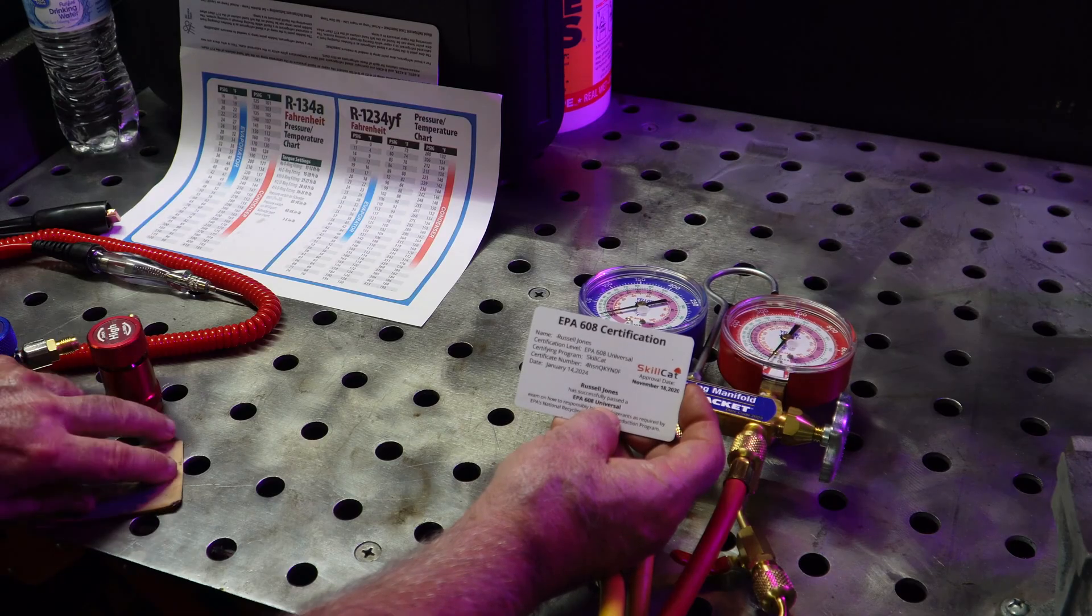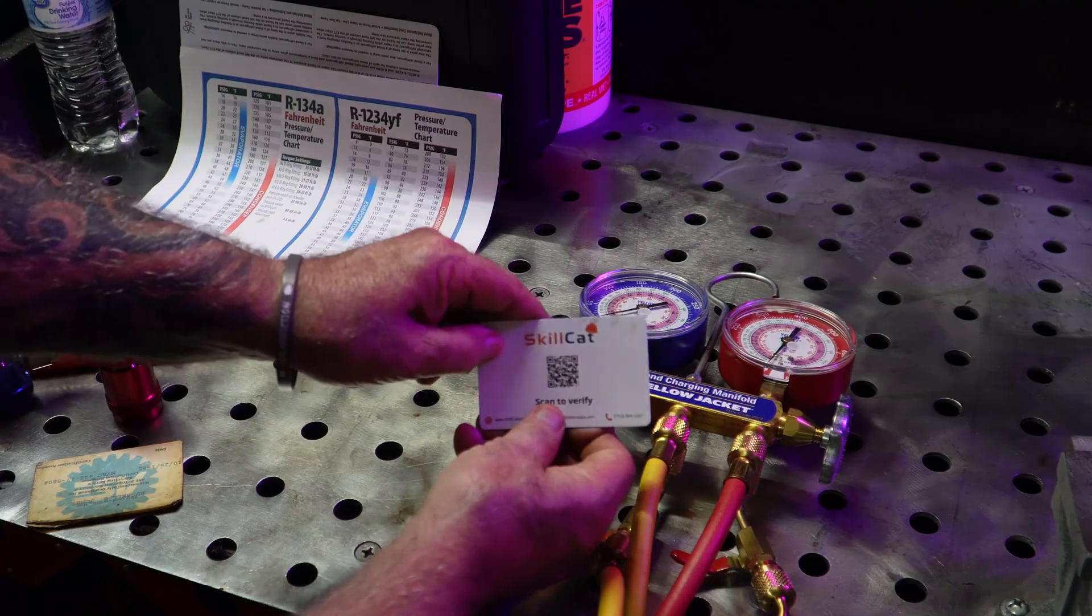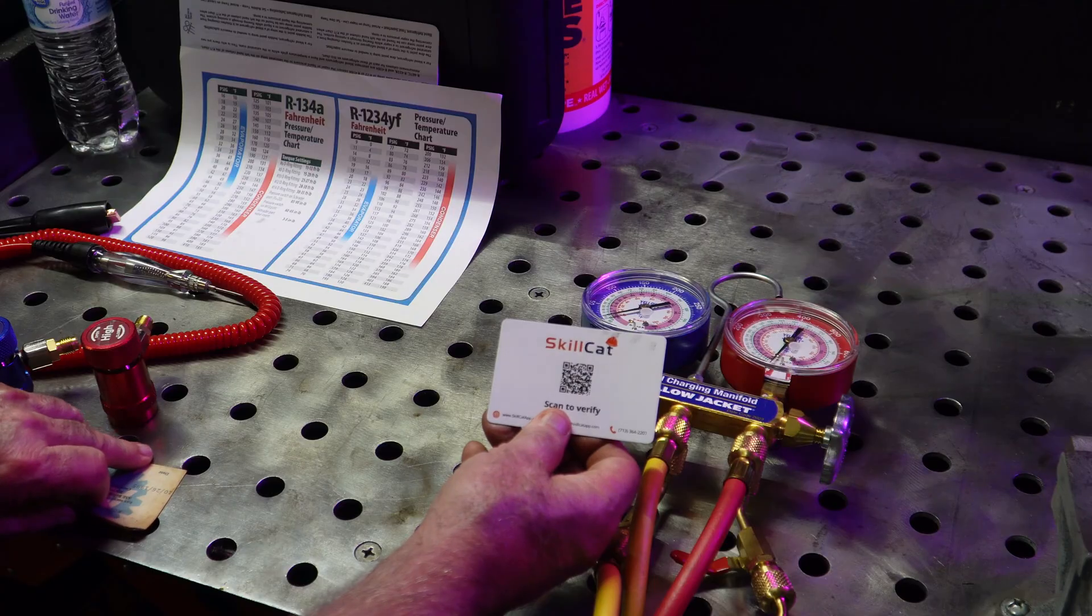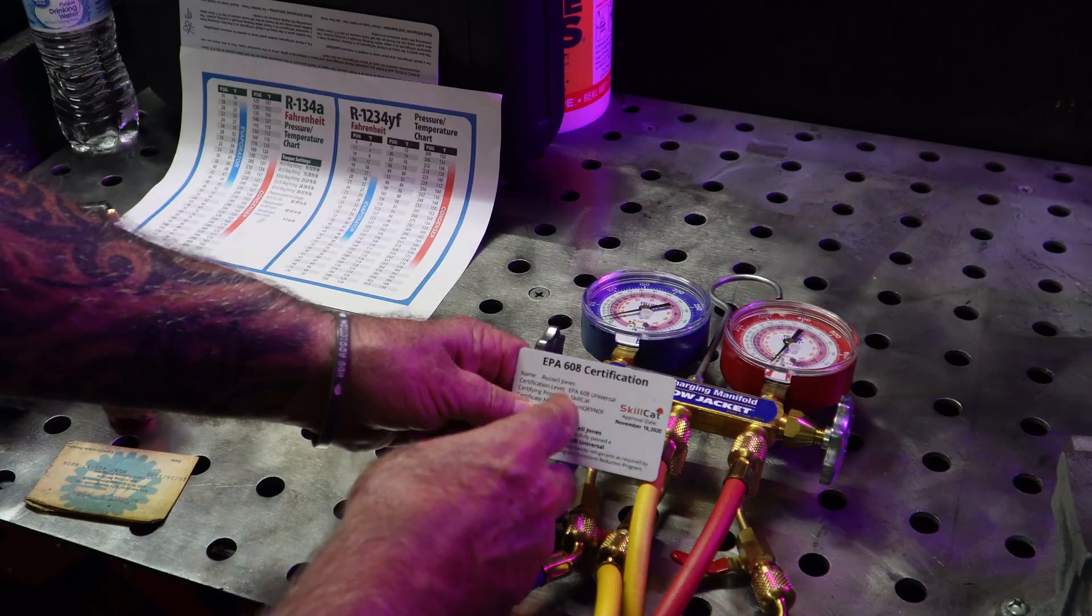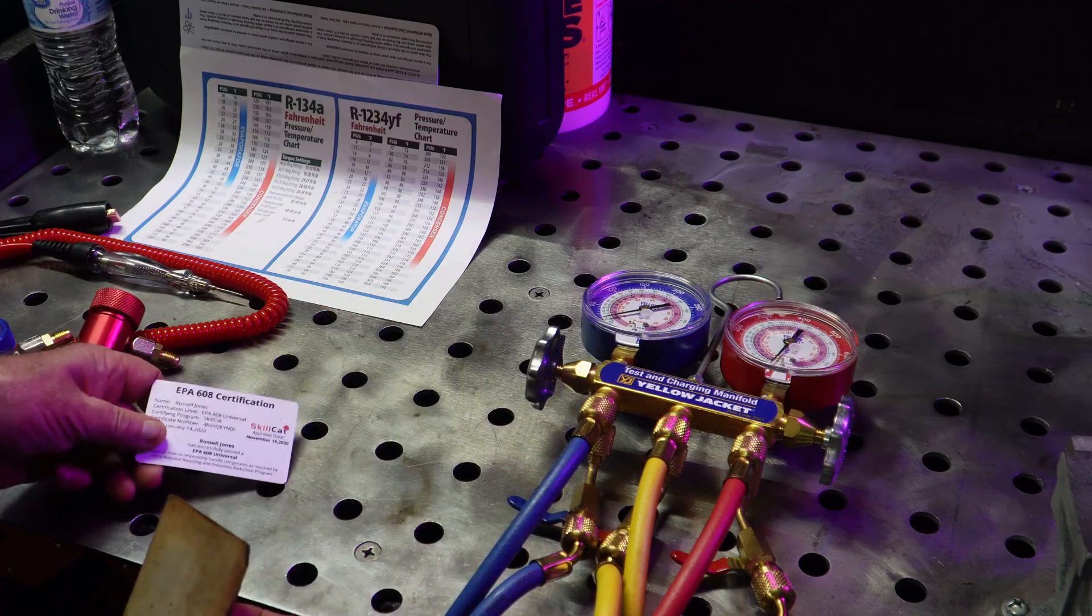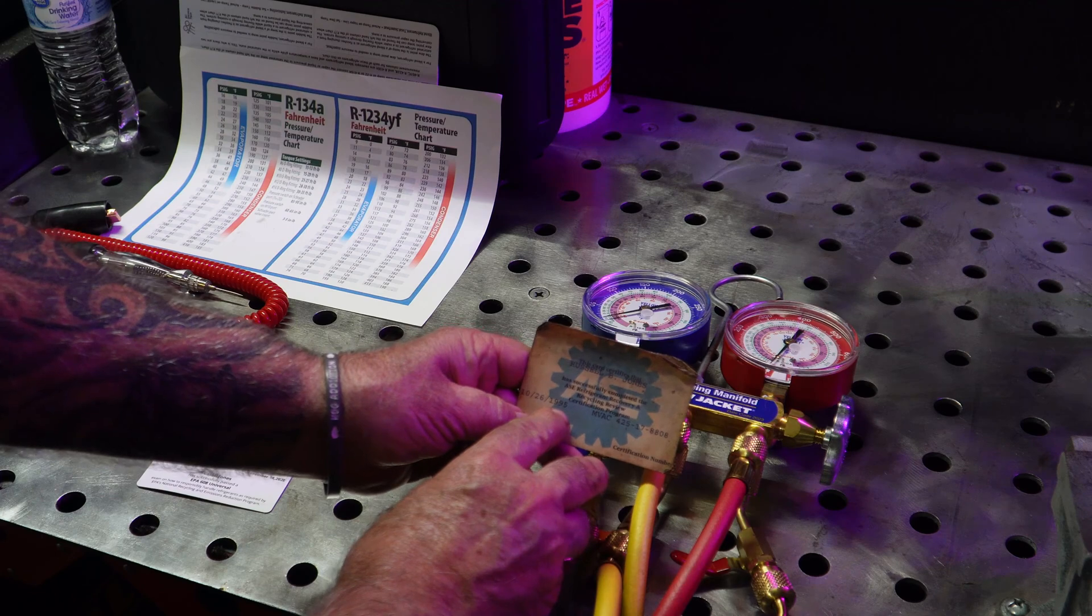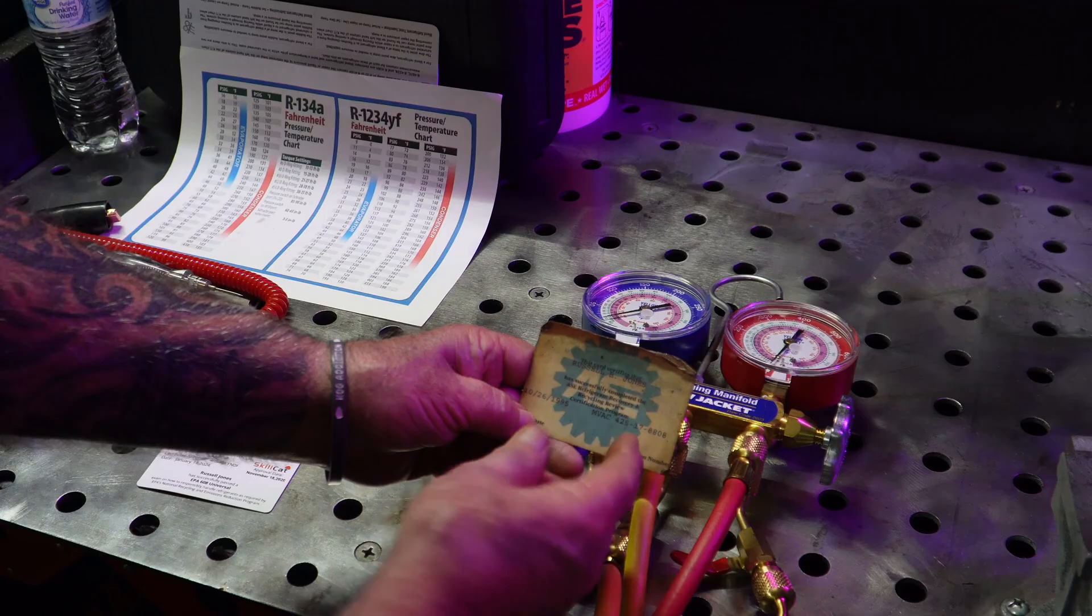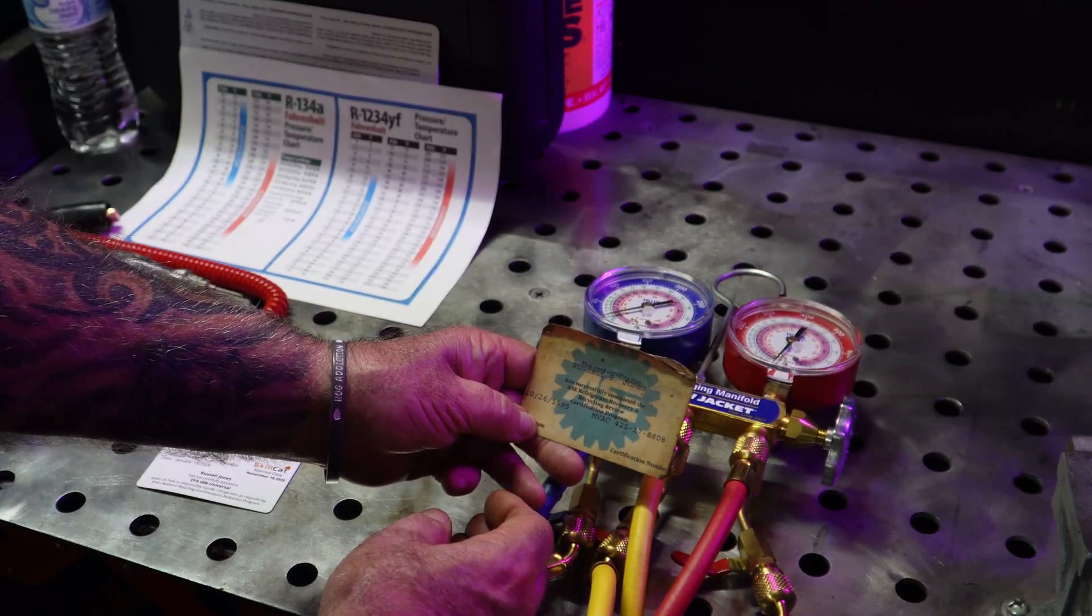Automotive has a whole different certification. They have an EPA 609 certification. I'm waiting for Skillcat to come out. They've already got the program, they're just waiting on EPA approval. They are definitely approved by the EPA on 608. You can actually Google that and they're listed as one of the people that's certified to give you that exam. This is one I had back in 1995. That's the one I had to use back then to recover R134a. That's no longer valid. At some point they changed it and it's a more elaborate exam than what it used to be.